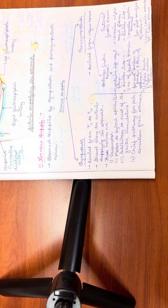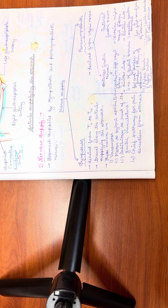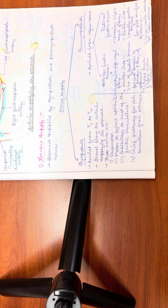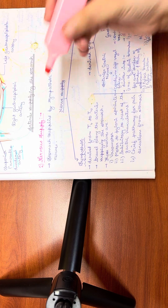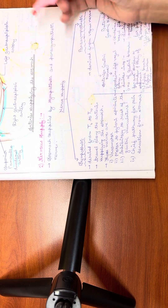In our last video we studied the parts, arterial and blood supply of the stomach. Now in this video we will cover the nervous supply, the lymphatic drainage, and the applied anatomy of the stomach. Our stomach is supplied by both sympathetic and parasympathetic nerves.